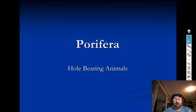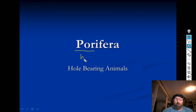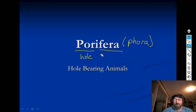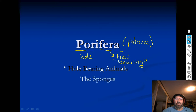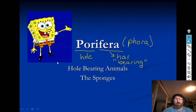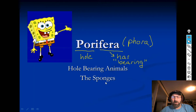That leads us to the first group of animals we're going to talk about: Porifera. It's helpful to break words apart. 'Por' means hole, and 'phora' as a suffix means bearing or has. So Porifera literally means 'it has holes.' You're familiar with one of the most famous ones — good old SpongeBob. Porifera are the sponges.